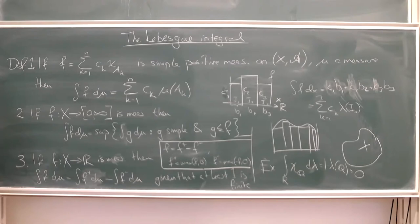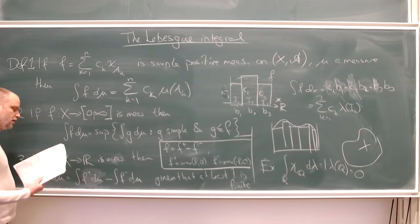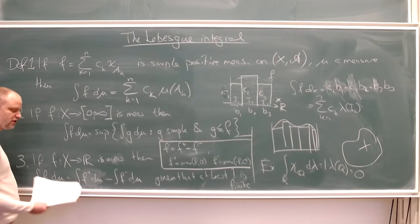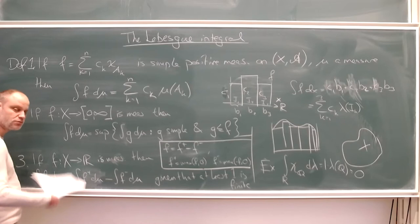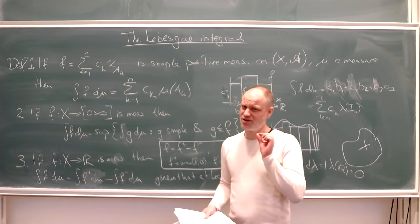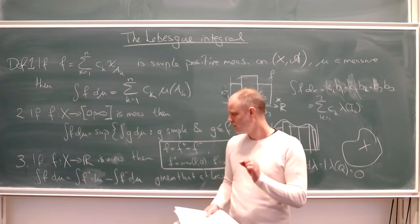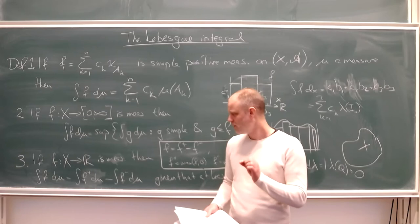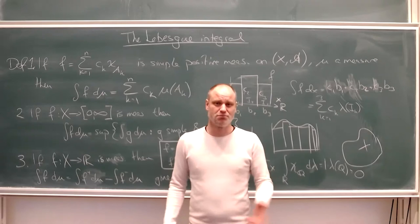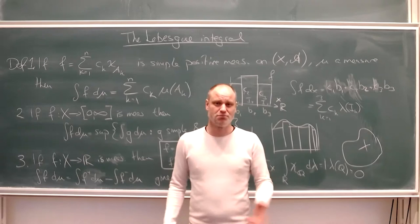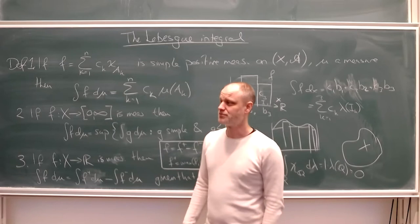Given that at least one is finite: if you have two finite numbers, you take the difference — that's your integral. If one of them is infinite, you get infinite minus some finite number, which is still infinite. If both are infinite, then infinity minus infinity simply doesn't exist. When both are finite, we say that f is integrable. If only one is finite, the integral exists but the function is not integrable — an annoying distinction in the book's terminology.